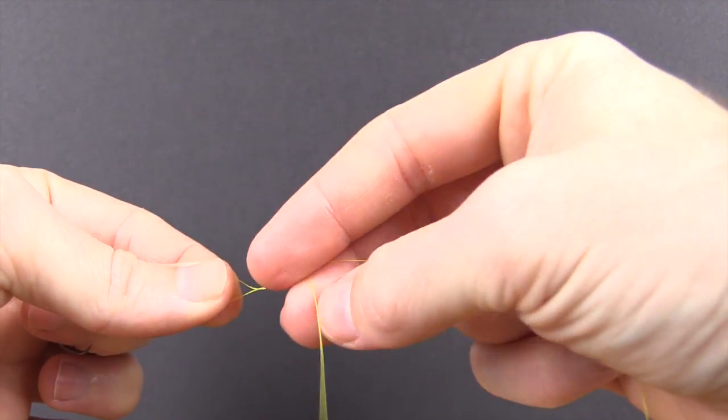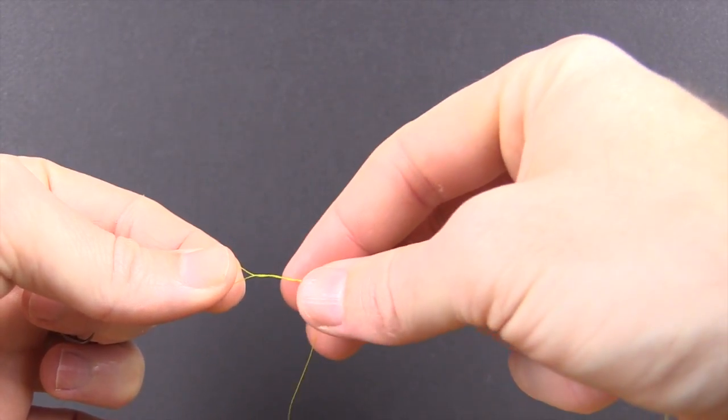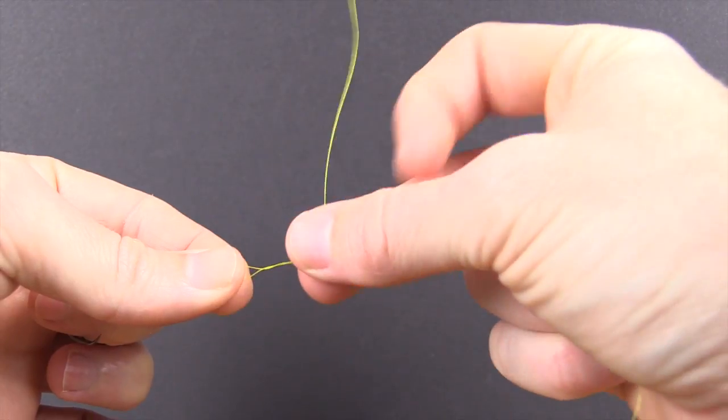We're going to go through the line, and the typical improved clinch knot says to go around five times. We're going to double that, so we're going to go around it ten times.